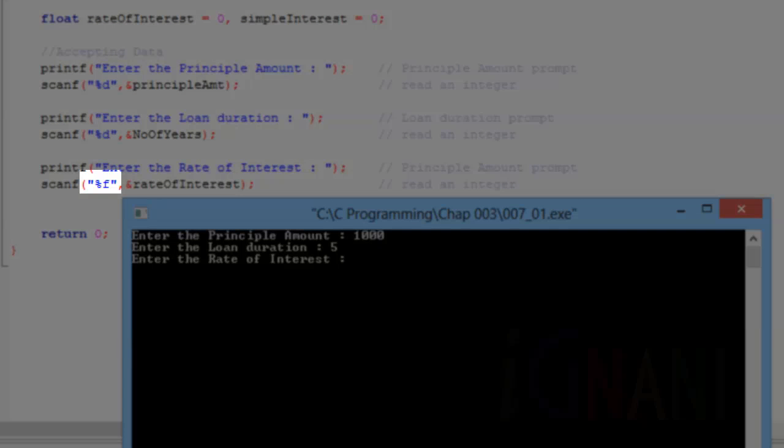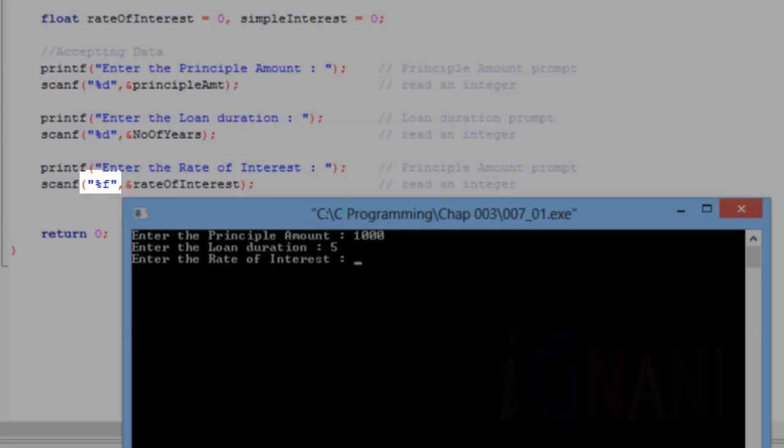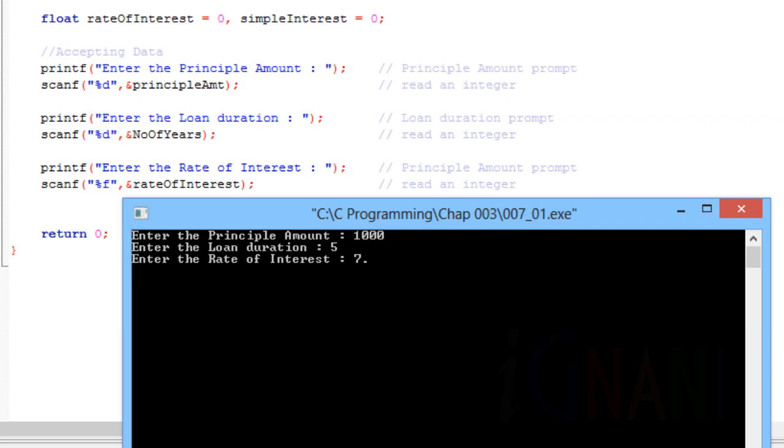However, one change that is to be noticed here is the use of percent f format specifier as the first argument, which indicates the data should be a floating point number, since the variable rate of interest is of float type.